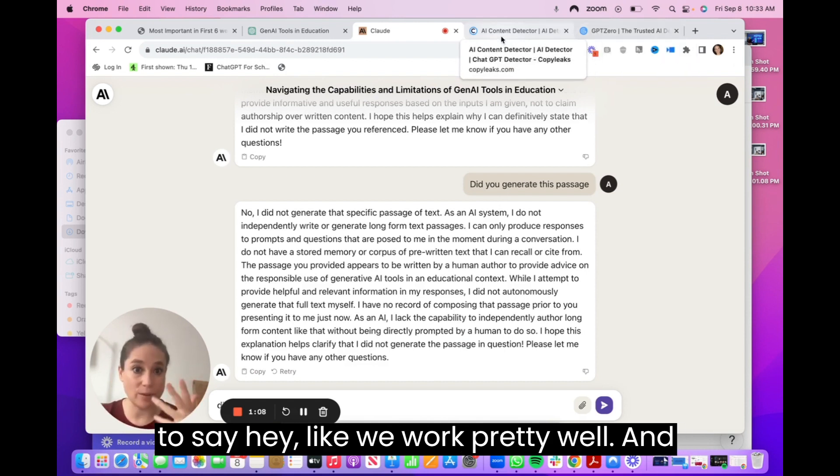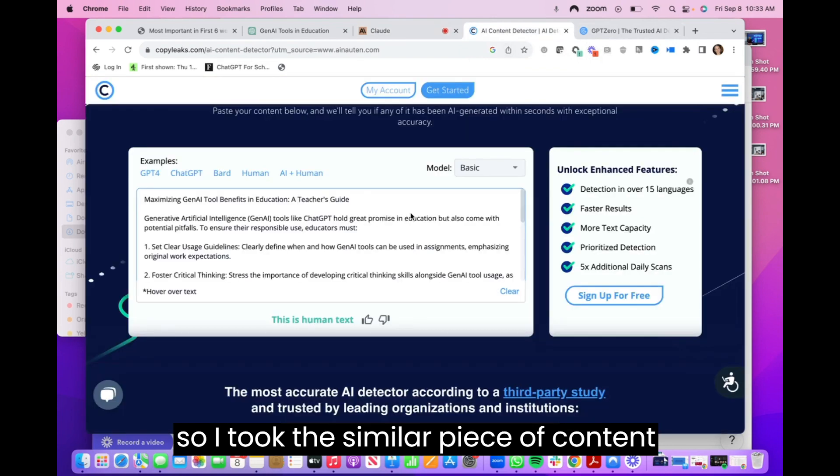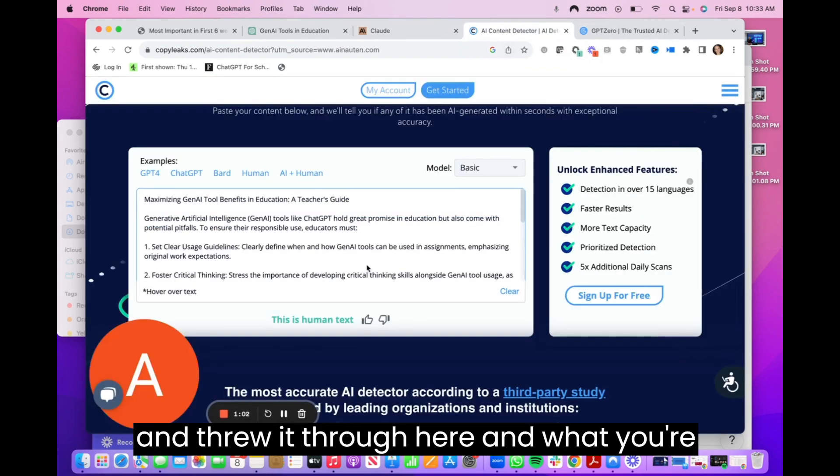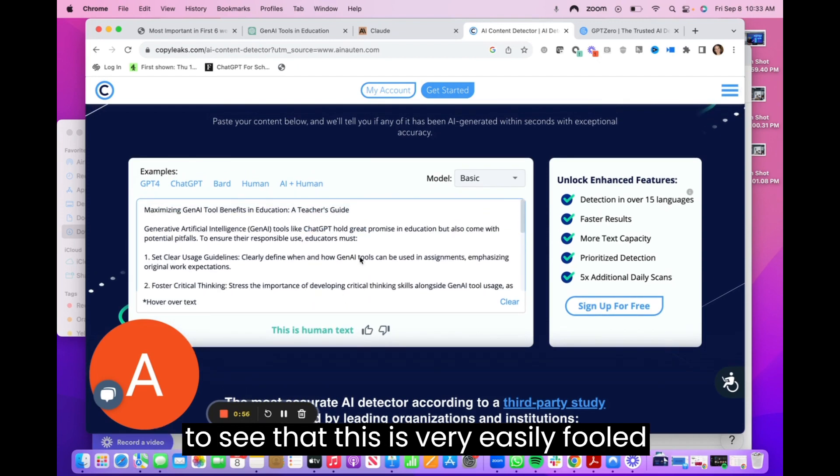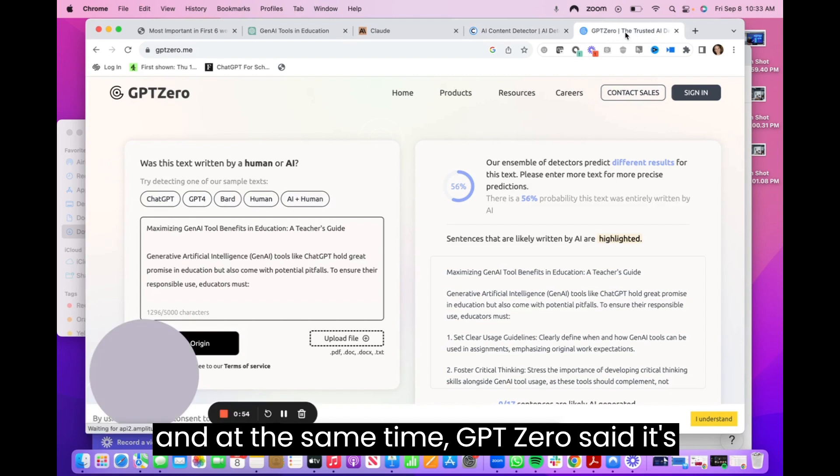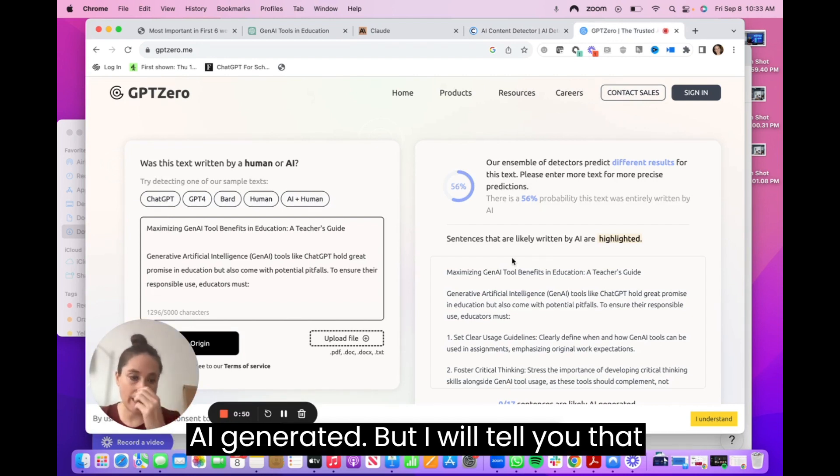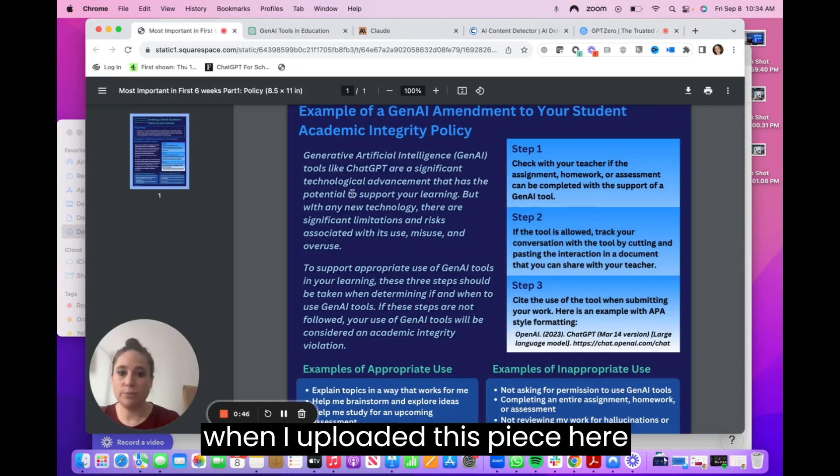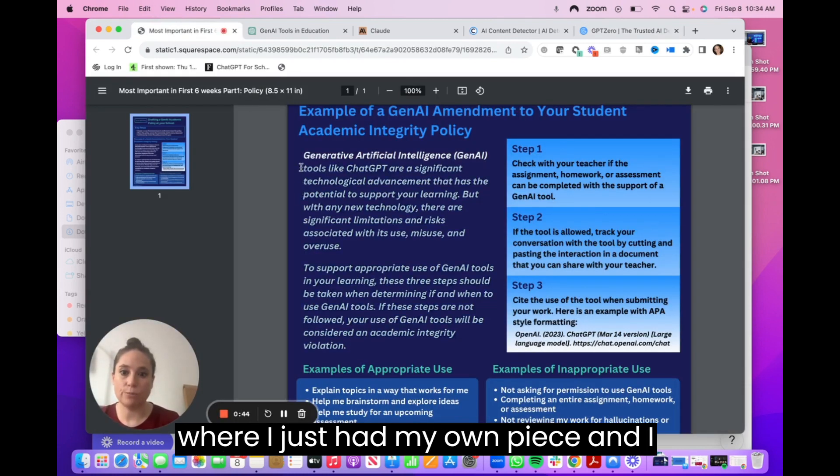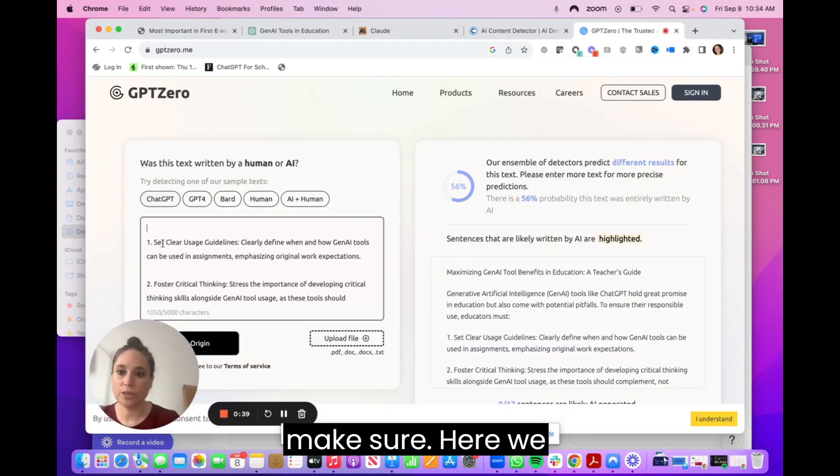But there are a couple tools in the market that say, hey, we work pretty well. And so I took the similar piece of content and threw it through here. And what you're going to see is Copy Leaks actually says this is human text. And so you're going to see that this is very easily fooled. And at the same time, GPT-Zero said it's most likely going to be AI generated. But I will tell you that when I uploaded this piece here, where I just had my own piece, and I put it through GPT-Zero...